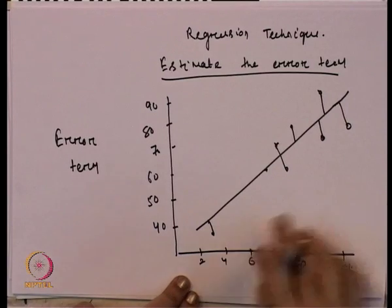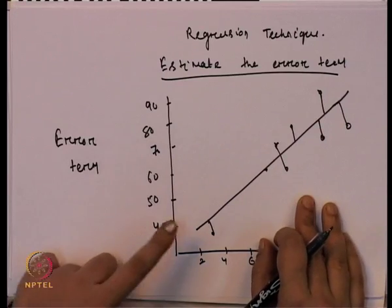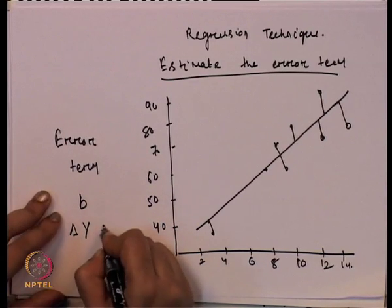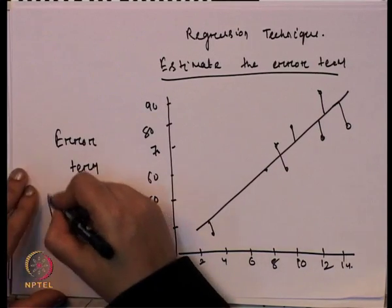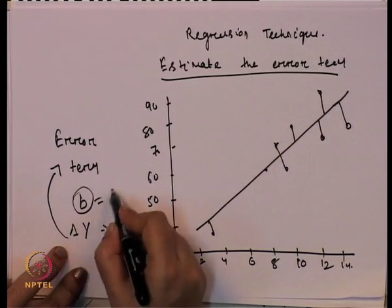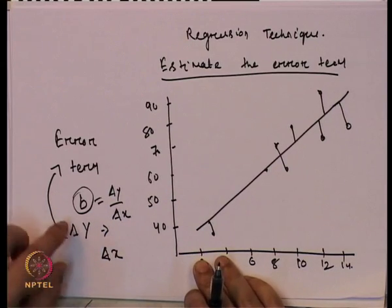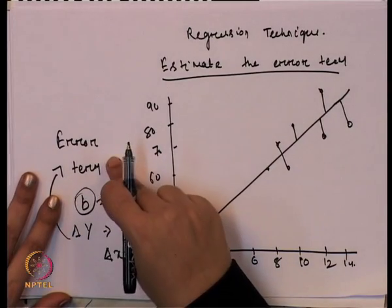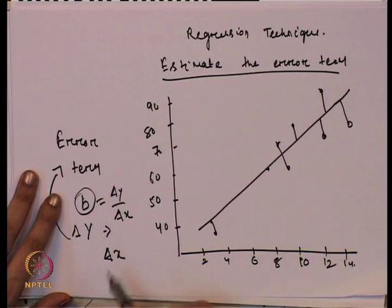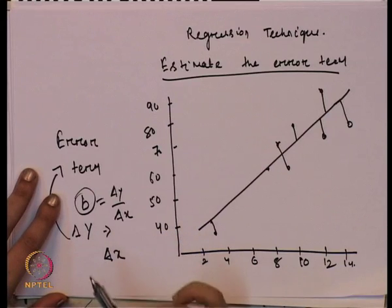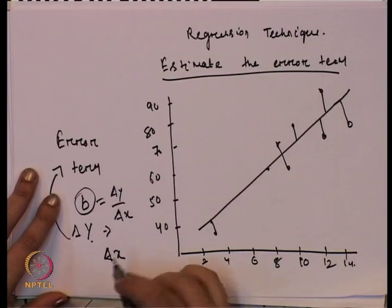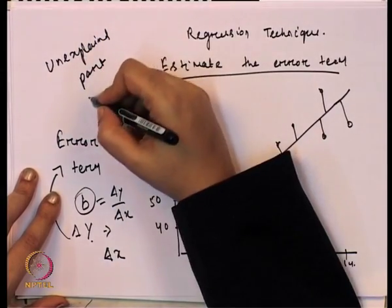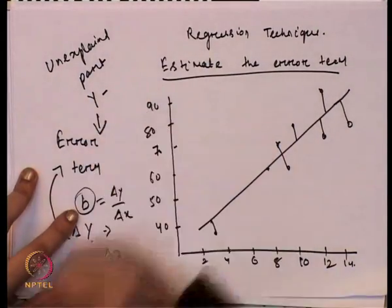We call it the error term because there is a deviation between the regression line and the actual data points. Since there is an error term, the slope B does not explain the total change in Y with respect to change in X. Slope B is basically ∂Y/∂X. Since there is a difference between the regression line and the actual data point, that leads to the error term, implying that the slope B is not explaining the total change in Y with respect to change in X — there is some unexplained part of Y, which is the error term.